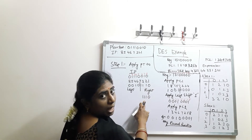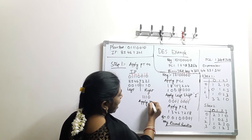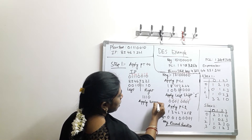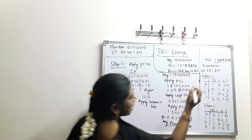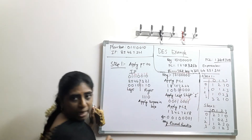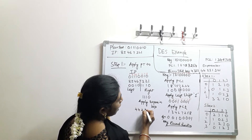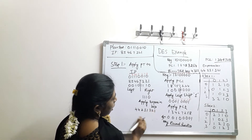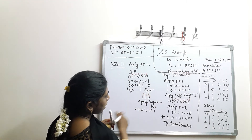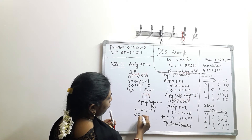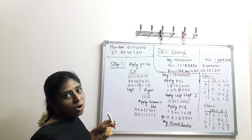These right half bits are applied to the expansion function, also called the expansion box. The expansion box values are 4, 4, 3, 2, 3, 1, 3, 2, 1. Applying them: 4th bit is 0, then 0, 1, 1, 1, 1, 1, 1, 1. These are the expanded bits we have obtained.